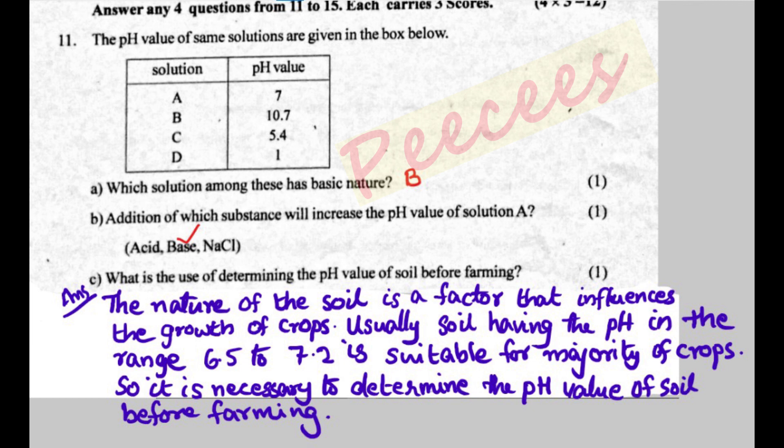11th question. The pH values of some solutions are given: A is 7, B is 10.7, C is 5.4, D is 1. pH 7 is neutral; above 7 is alkaline; below 7 is acidic. Which solution among these has basic nature? B, with pH 10.7, has basic (alkaline) nature.